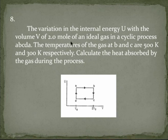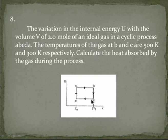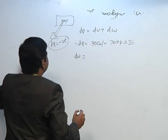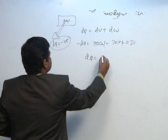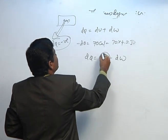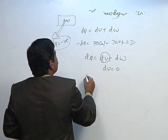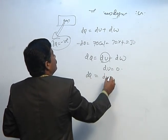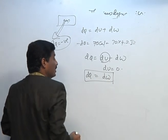Here, two moles of an ideal gas undergo a cyclic process ABCDA. The temperature of the gas at B and C is given: at B it is 500 kelvin and at C it is 300 kelvin. Calculate the heat absorbed during this process. Applying the first law: DQ = DU + DW. For a cyclic process, DU = 0, so DQ = DW. We need to find DW.